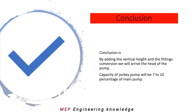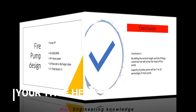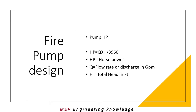In conclusion, by adding the vertical height and the fittings conversion we arrive at the head of the pump. This is applicable for all sprinkler and hydrant pumps. The capacity of the jockey pump will be 7 to 10 percent of the main pump capacity — this is the industry standard. After finding the discharge and head of the pump, we need to find the HP of the pump, that is, the horsepower.